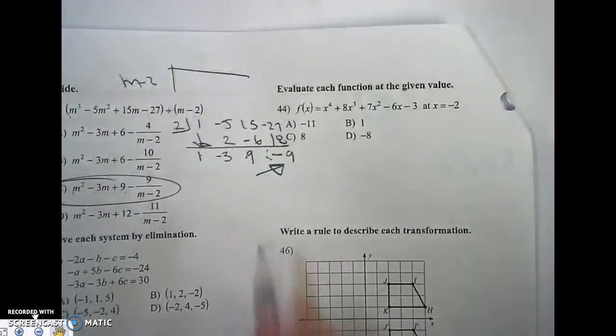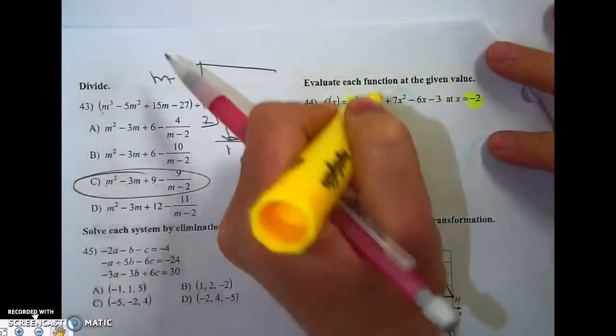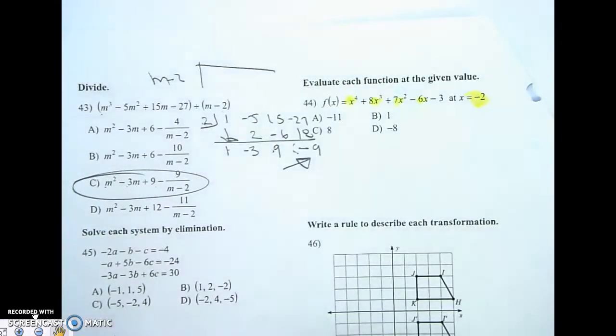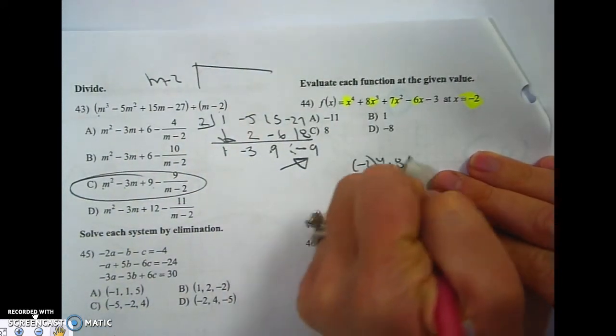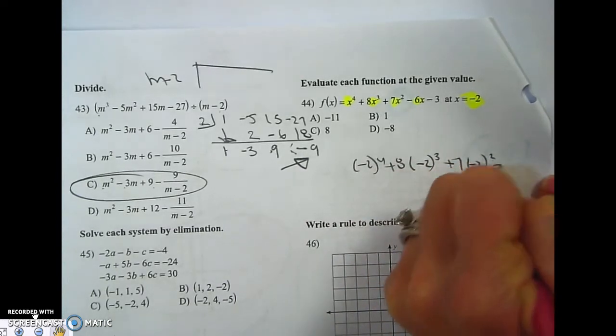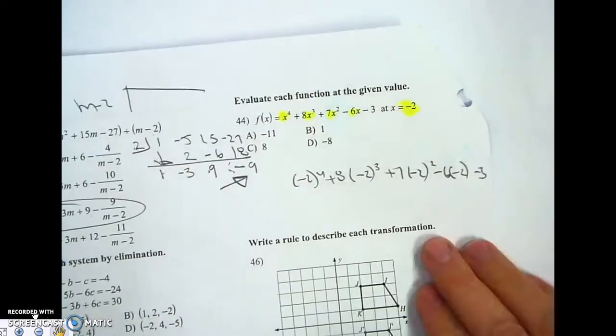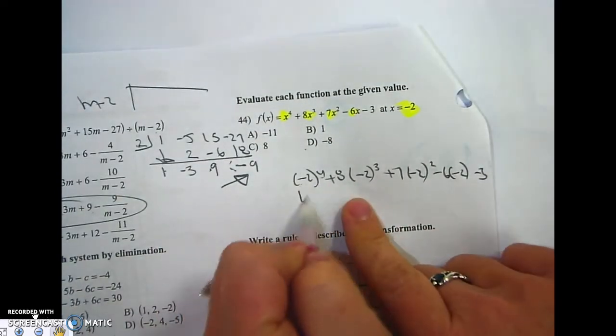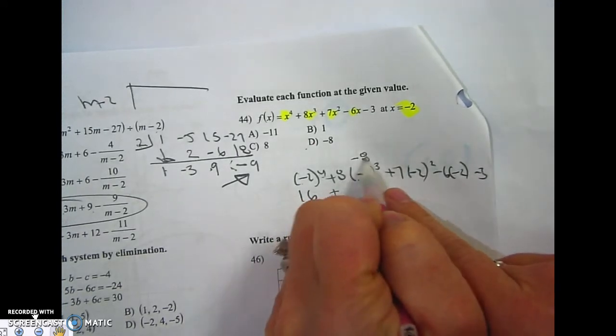Okay, let's go over to number 44. So what they're asking me to do is take negative 2 and plug it in. So I'm going to go negative 2 to the 4th, plus 8 times negative 2 cubed, plus 7 times negative 2 squared, minus 6 times negative 2, minus 3. When a negative is taken to an even power, it turns positive. When it's taken to an odd power, it stays negative.